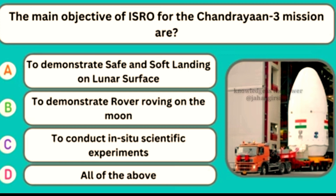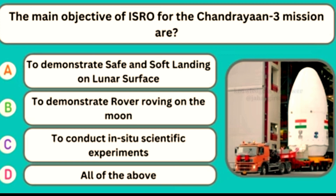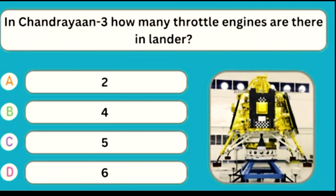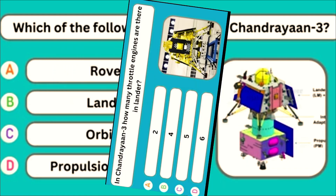The main objectives of ISRO for the Chandrayaan-3 mission are — Option D — All of the above. In Chandrayaan-3, how many throttle engines are there in the lander? Option B — Four.